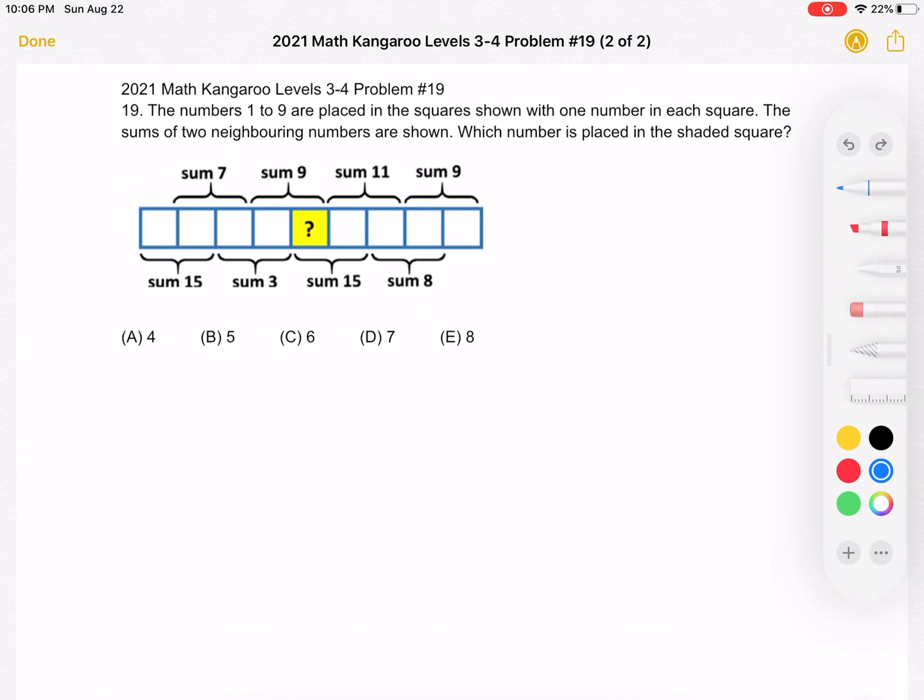To start, we have the numbers 1 through 9. I've written them here so we can take a look at them. Let's start with the sum of 15. Using the numbers 1 through 9, as shown here, how can we make 15?